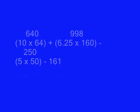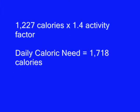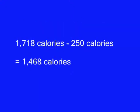Next, I'm taking Jane's resting metabolic rate and multiplying it by her activity factor, giving us a daily caloric need of 1,718 calories. But we're not done yet. Jane wants to lose weight, so we're going to create a caloric deficit of 250 calories. Subtracting 250 from her daily caloric need gives us 1,468 calories — that's how many calories Jane will eat on a daily basis in order to lose weight.